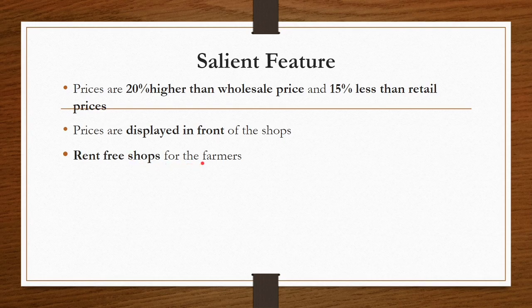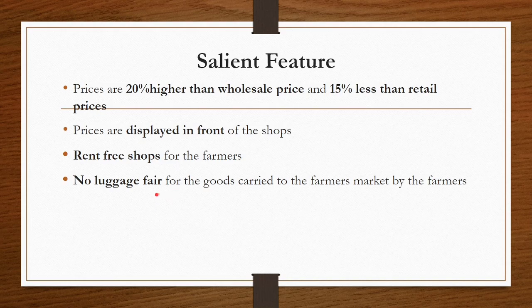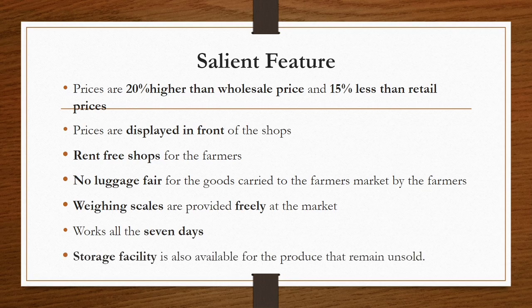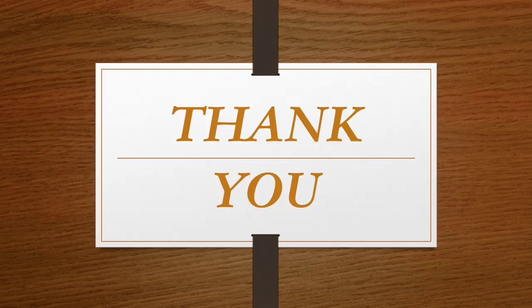Rent-free shops are provided for farmers selling their produce, and they can store their produce there until it is sold. There are no luggage fares for goods carried to the market while transporting produce from the production point. Weighing scales are provided freely at the market — weighing machines are given at no cost for every farmer selling in the farmers market. The farmers market works all seven days a week and storage facilities are also available for remaining unsold produce.